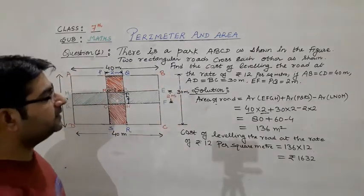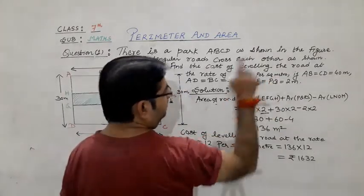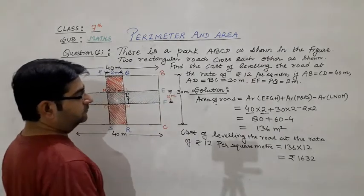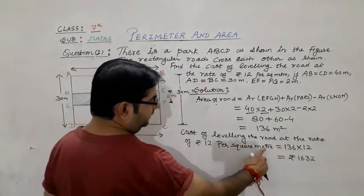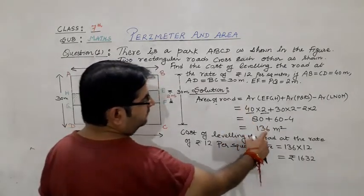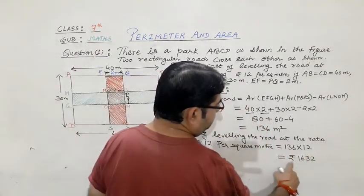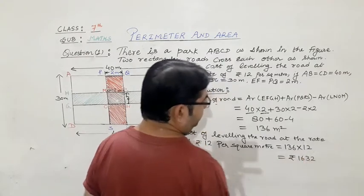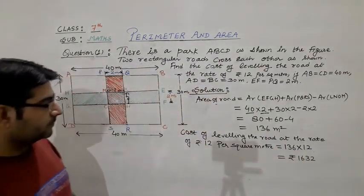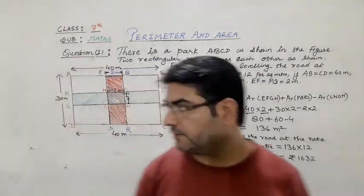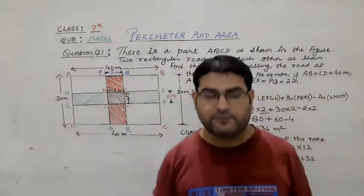And now, cost of turfing is 12 rupees per square meter. So the cost of turfing at the rate of 12 per square meter, we will multiply 136 by 12. We will get rupees 1632. My friends, I am sure that you understood this question very well. Thank you very much.